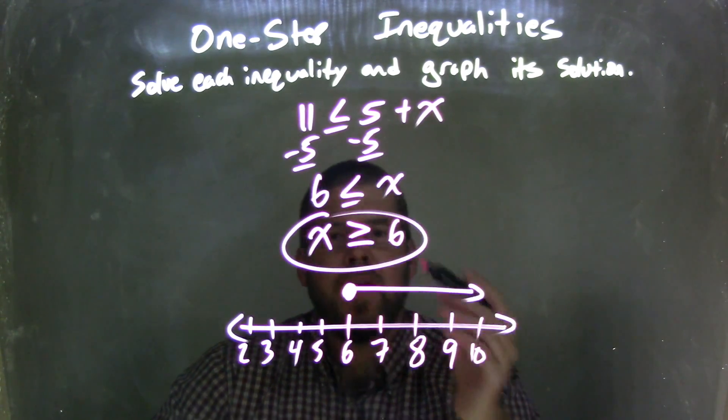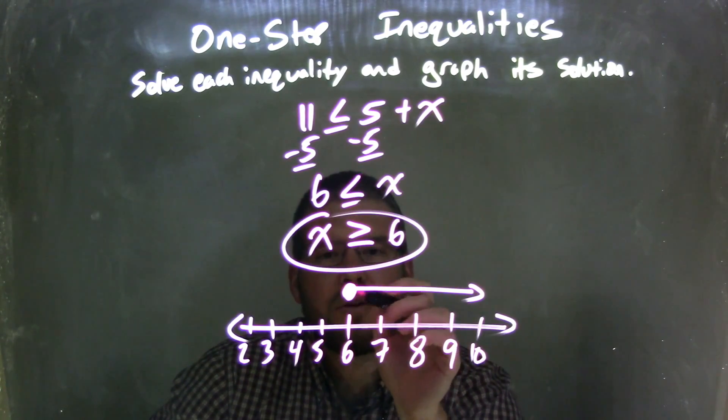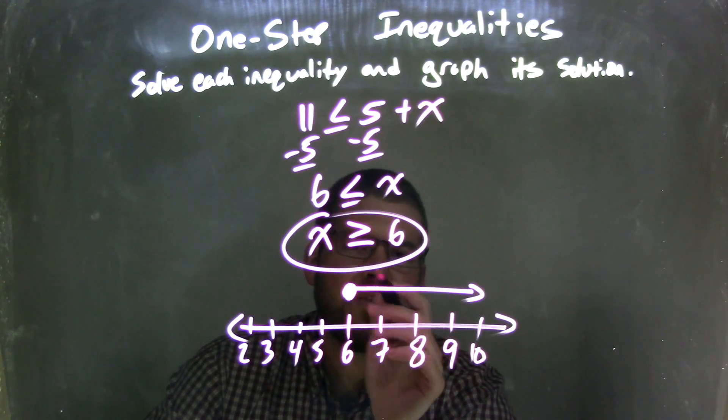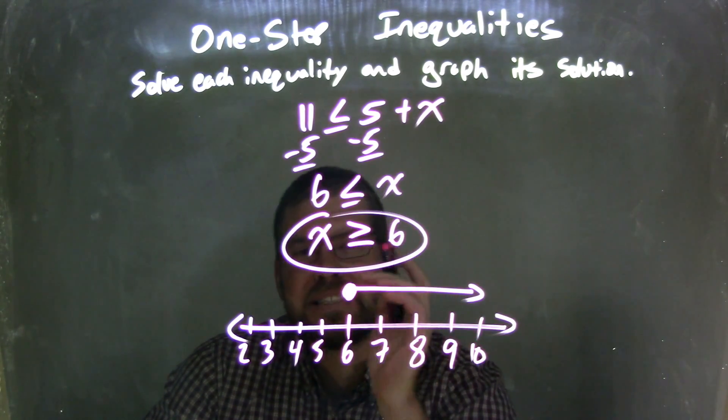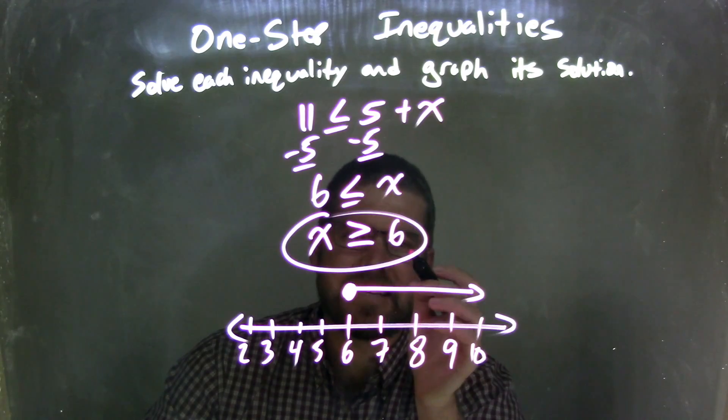So I graphed that. Since it's equal to 6, I put a closed circle at 6. And since x was greater than as well, I put the arrow to the right, showing that my graph here matches my answer, which is x is greater than or equal to 6. So that's our graph.